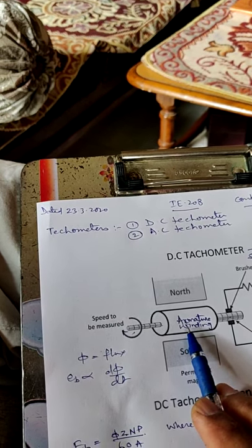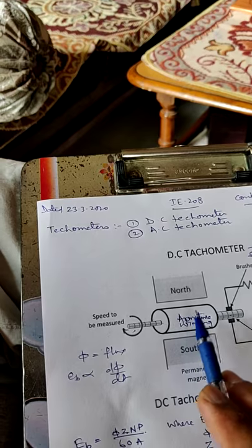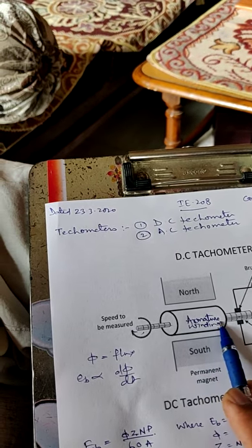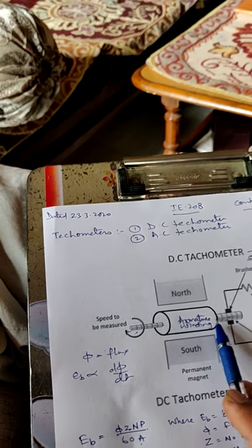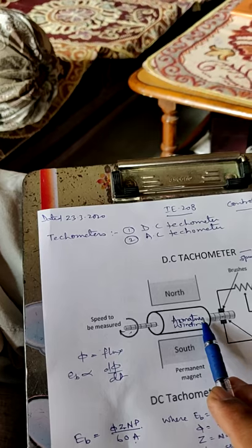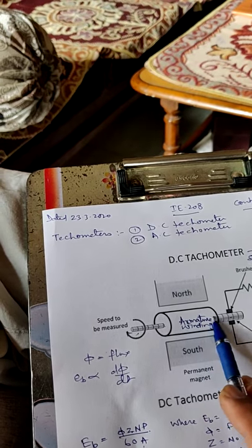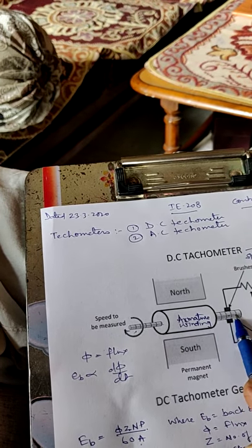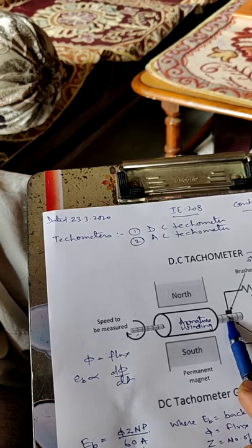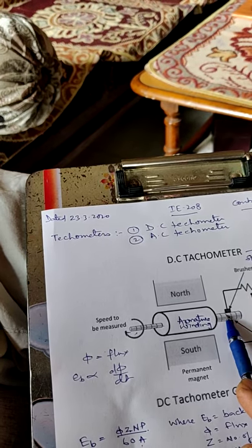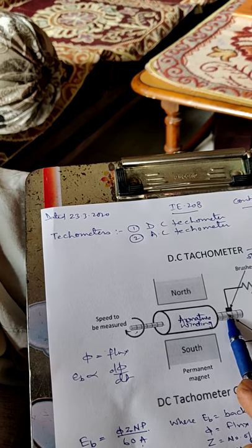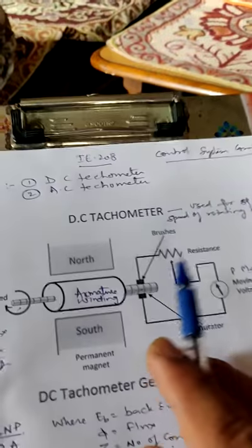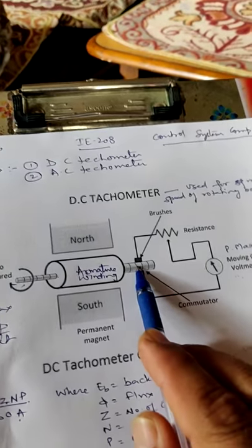The conductor is moving in these two magnetic fields and it produces an alternating voltage according to Faraday's law. This AC voltage is coming from these conductors to the commutator. The commutator is made up of copper and it converts the AC voltage into DC voltage.